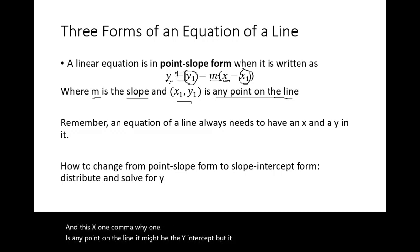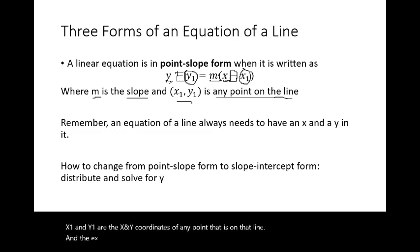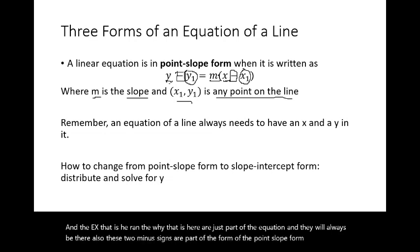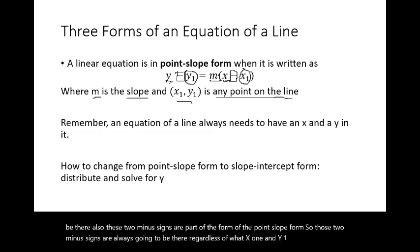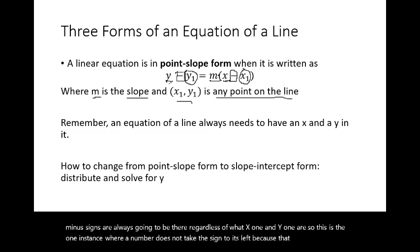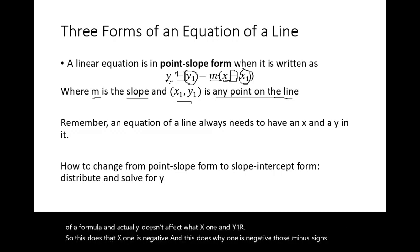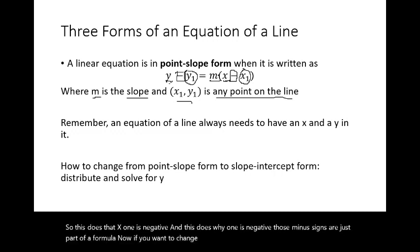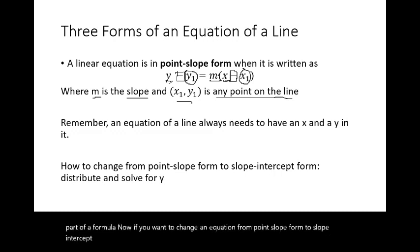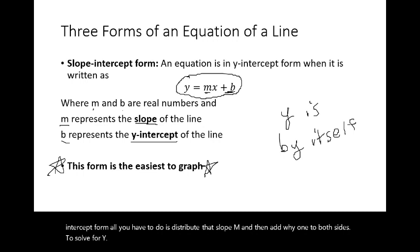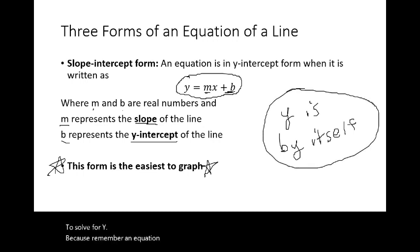The two minus signs in point-slope form are always part of the formula and are always there regardless of what x1 and y1 are. This does not mean x1 or y1 are negative — those minus signs are just part of the formula. To convert point-slope form to slope-intercept form, distribute the slope m, then add y1 to both sides to solve for y, since slope-intercept form requires y to be by itself.